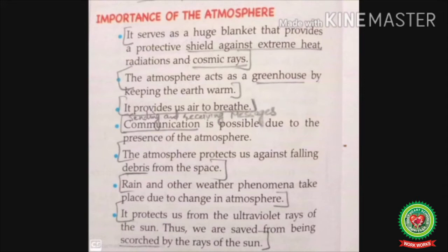The atmosphere is a huge blanket of air that surrounds the earth. It has different layers — in the stratosphere, the ozone layer is present, which protects us from the harmful rays of the sun. It acts as a protective shield against extreme heat and radiation, and it traps the heat.